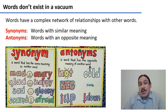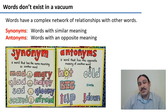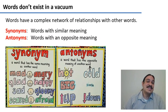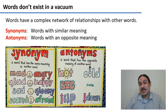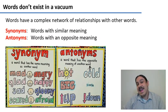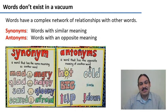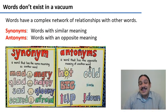Words don't exist in a vacuum — words have relationships with one another. For example, words can have synonyms, which are words of similar meaning, and antonyms, which are words with the opposite meaning. We've seen these since grade school.